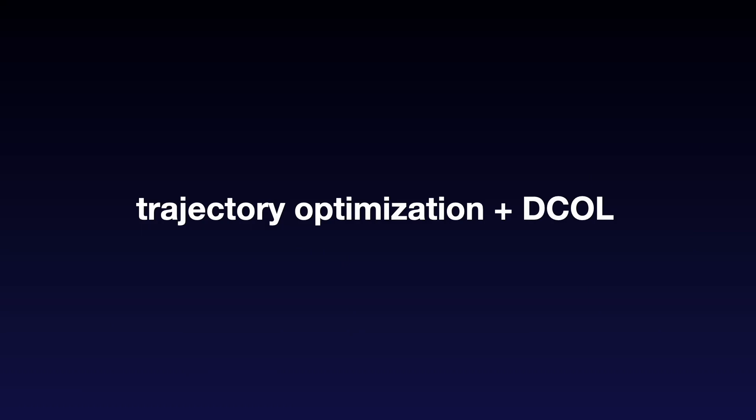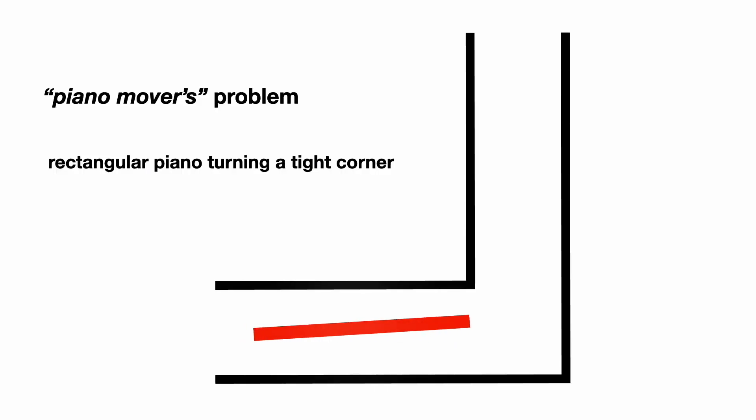Trajectory optimization with collision constraints represented with DCOL are used to solve a variety of challenging motion planning problems. The first of which is the piano movers problem, where a rectangular piano has to move around a tight corner.